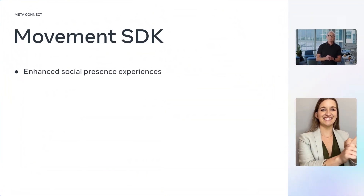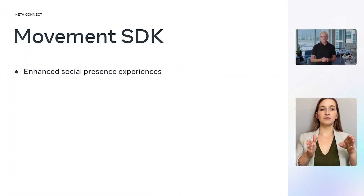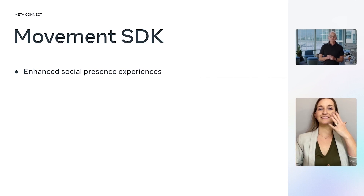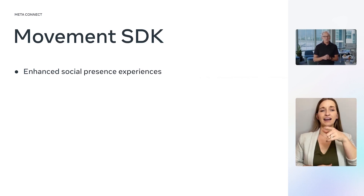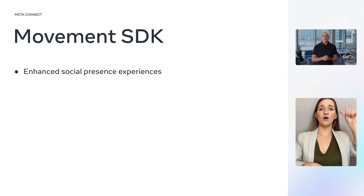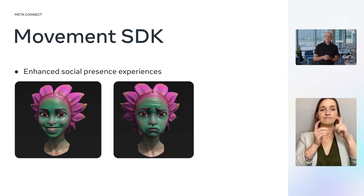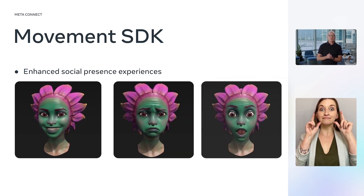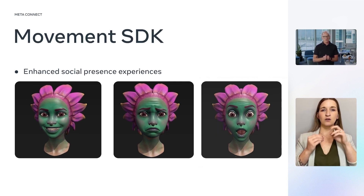These improved capabilities enable developers to build enhanced social presence experiences. For instance, in the past, your face tracking could only rely upon audio cues. However, with new sensor technology in the MetaQuest Pro, we can now reflect silent facial movements like smiling, frowning, or even looking surprised. These features bring your character models to life, allowing you to have a nuanced conversation in a VR experience.